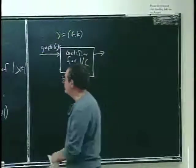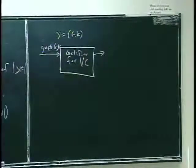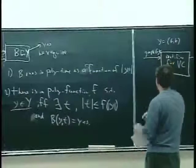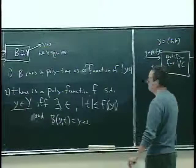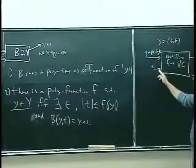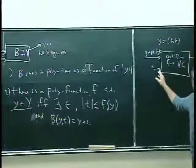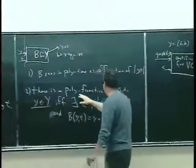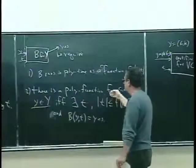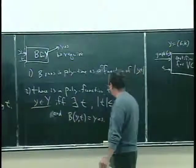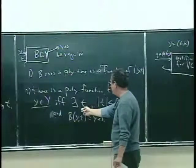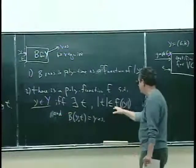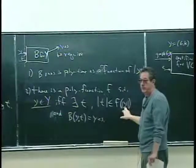To be an efficient certifier, first it has to run in polynomial time as a function of the input y and also the input t, which is some additional input. And there has to be some polynomial function f such that the strings t you give it are not huge — they're bounded by a polynomial function of the size of little y.